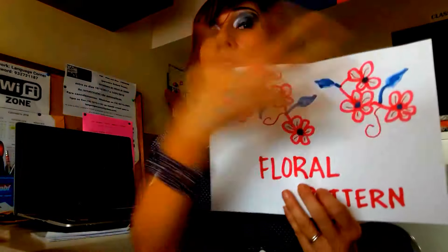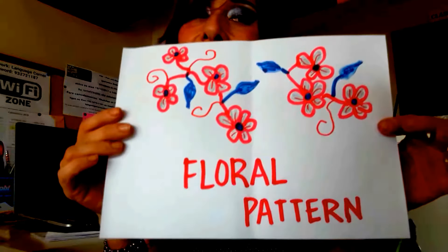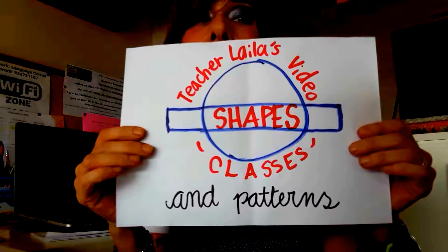If you find flowers on a rug or sofa, it's the floral pattern. There are other patterns I couldn't draw or find — Hawaiian pattern and Paisley pattern, which was quite popular during the 70s and is now back in fashion. Today we learned about shapes and patterns. I hope you enjoyed today's class. I'll see you next time. Bye!